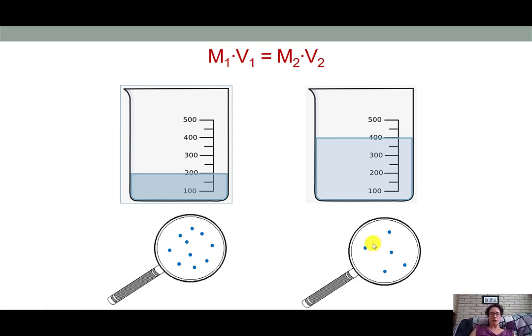We can use the equation M1V1 is equal to M2V2 in order to calculate the necessary volume of stock solution needed to prepare a given amount of working solution.